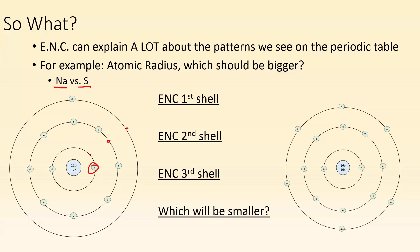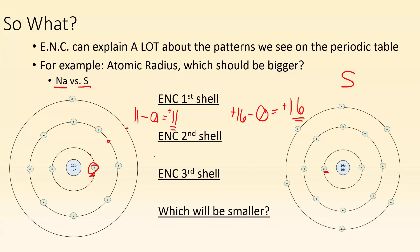Looking at the first shell for sodium: 11 protons minus 0 shielding electrons — they're experiencing a plus 11 effective nuclear charge. For sulfur: plus 16 in the nucleus minus 0 shielding electrons — they're experiencing a plus 16. So it's a different experience; sulfur's electrons are feeling more of a pull. Second shell: sodium is 11 minus 2 shielding electrons, experiencing a plus 9 effective nuclear charge. Sulfur is 16 minus 2 shielding electrons, experiencing a plus 14 effective nuclear charge.